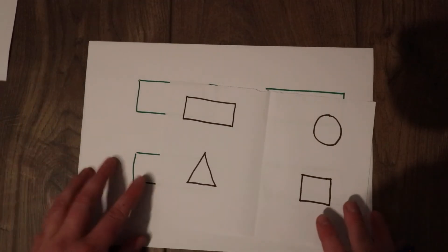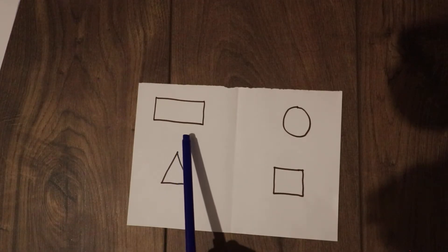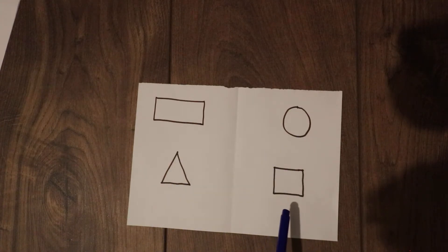I have got some shapes here. What shapes have I got? I have got a rectangle, a triangle, a circle, and a square.